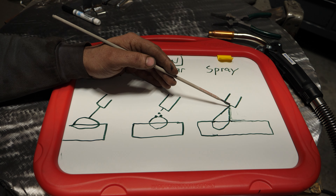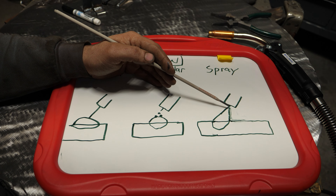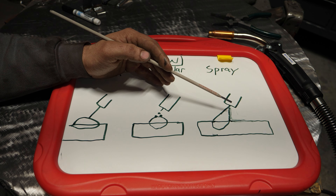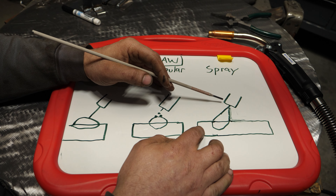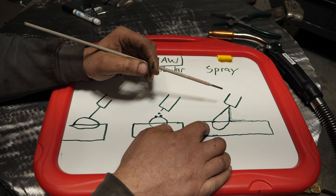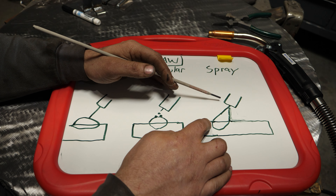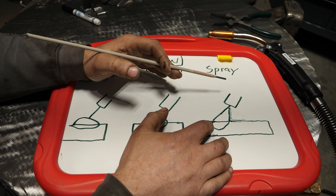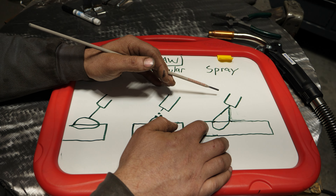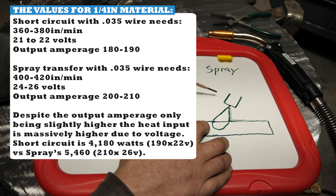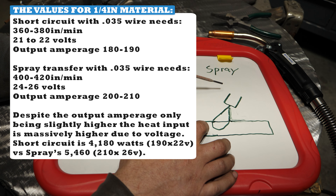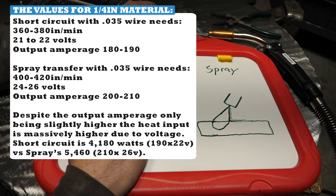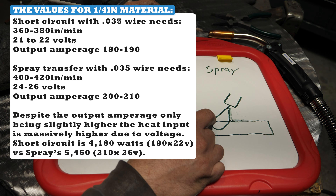The downside is you can't really weld thin plate. If you're trying to spray weld eighth-inch material, good luck — you're going to probably burn holes and it's going to get far too hot. So spray is only generally done with quarter inch, 3/16ths, and thicker steel. The other limitation is most machines cannot do spray. It's not just an amperage issue, it's a voltage issue. Spray arc can be achieved with .035 wire at under 200 amps, but you need to be at 25 or 26 volts. Most home hobby machines are incapable of producing that kind of voltage at that kind of amperage output.